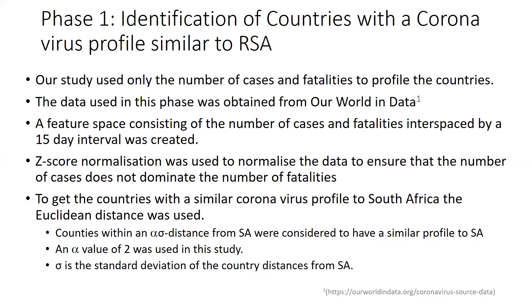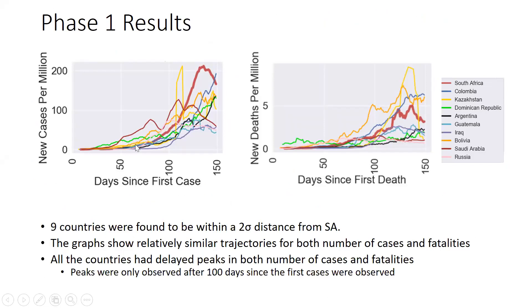We performed z-score normalization of our features. This was important because the number of cases was much larger than the number of fatalities, and we did not want it to dominate the data. After normalization, we computed the Euclidean distance of countries in our dataset from South Africa, and took countries within a two-sigma distance as those having a similar coronavirus profile. Sigma here is the standard deviation of the distance from South Africa, and alpha was set equal to two.